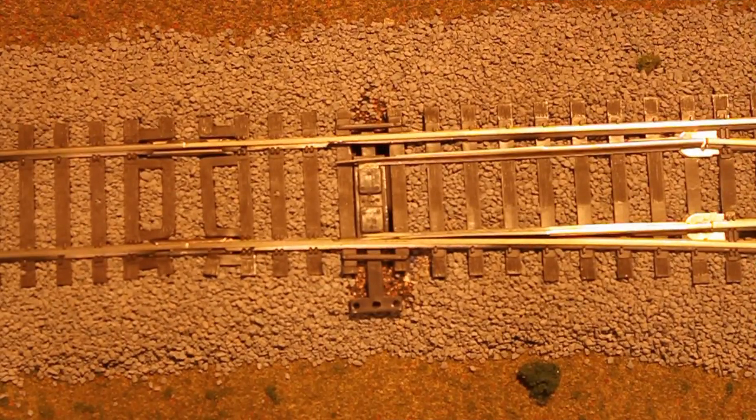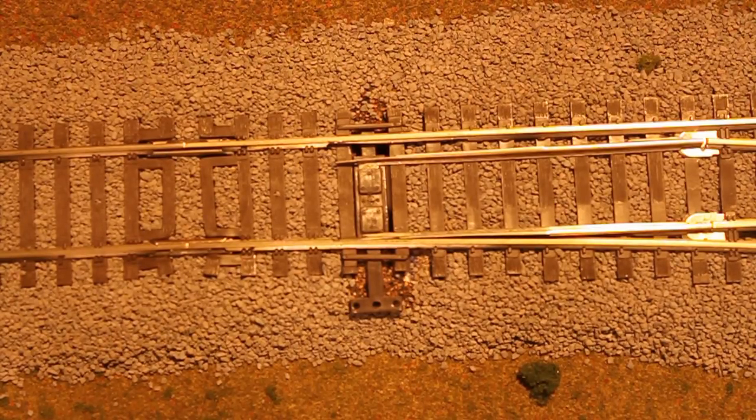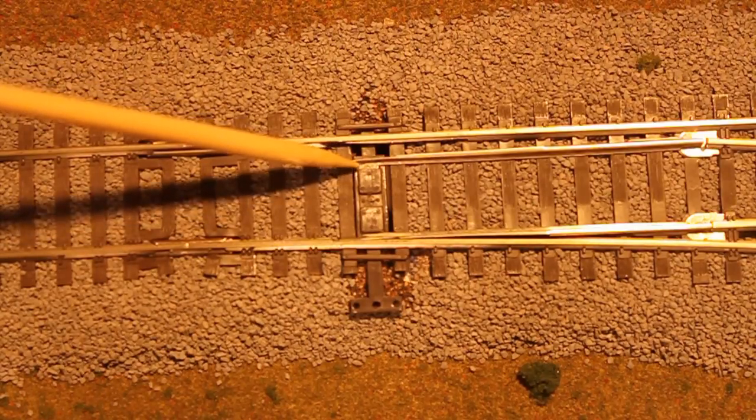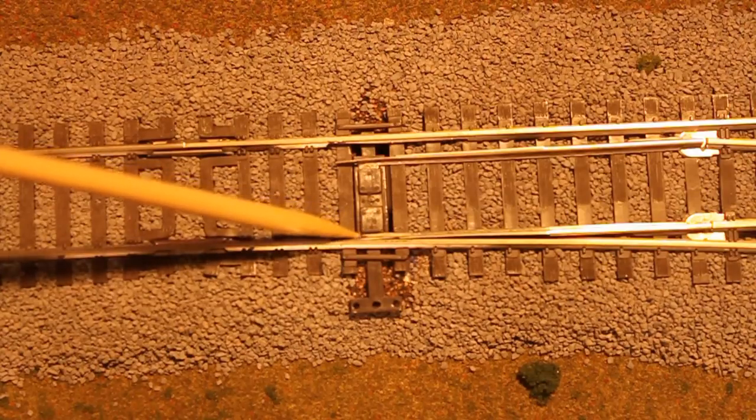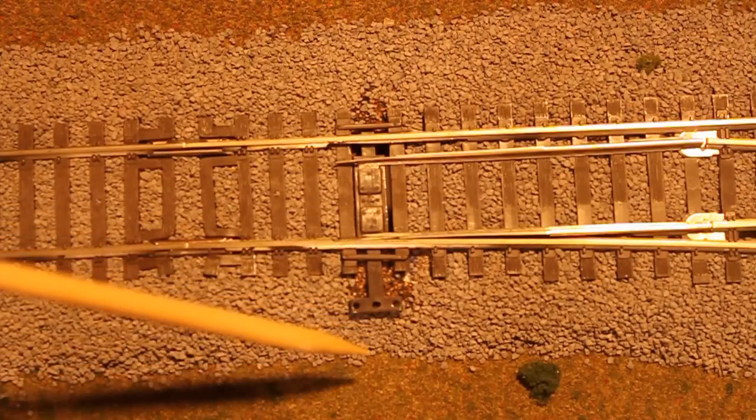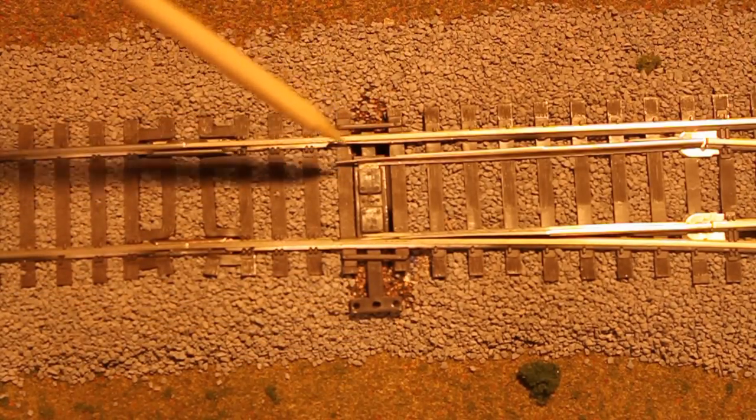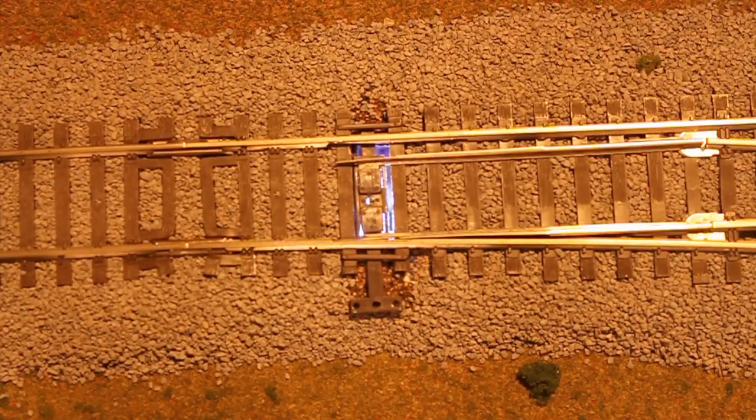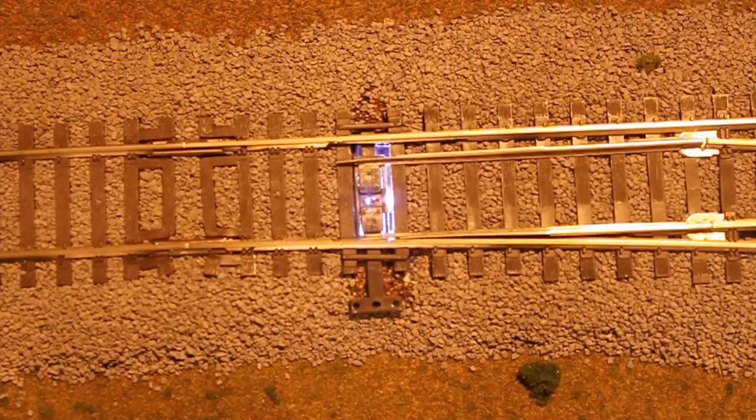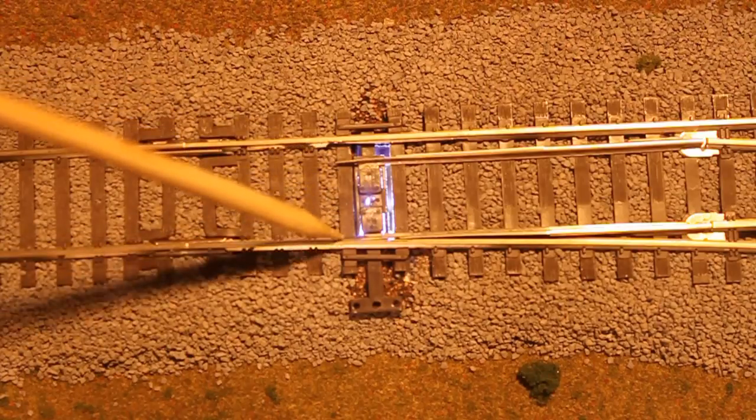Since the roadbed, track, and ballast were already down, I needed to cut out space underneath so I could get the rod for the switch control up through without any obstructions. I took the rail out of the switch control and this plastic piece just slid out underneath the rails. I took an Exacto knife and cut the roadbed out underneath the track.